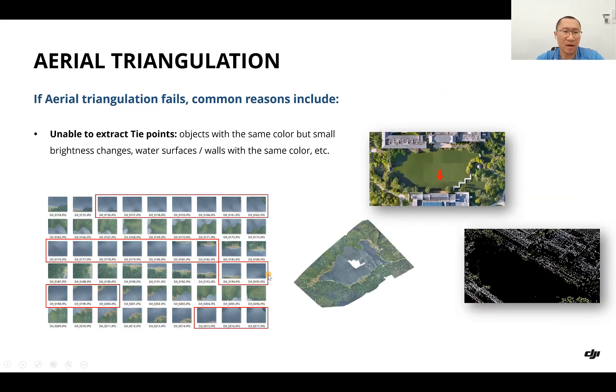If aerial triangulation fails, there are some common reasons. For example, the first one is if it's unable to extract tie points because the objects might have the same color with small brightness changes, such as when taking images of water surfaces or walls. In this case, you can see all these images have similar outlook, which makes it very hard to get tie points. After aerial triangulation there will be less point cloud generated and there will be a big hole in the final model.